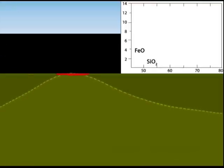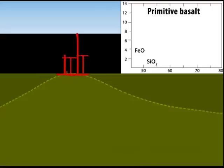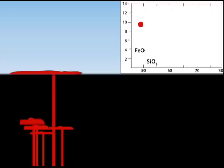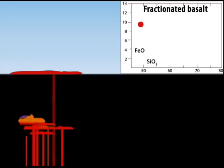Magma is injected into the crust and thin flows of primitive basalt erupt at the surface. Some of the basalt collected in small magma reservoirs cools and crystals separate on the way to the surface, making a fractionated basalt along a tholeiitic differentiation trend.